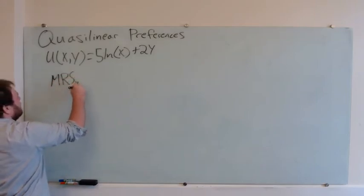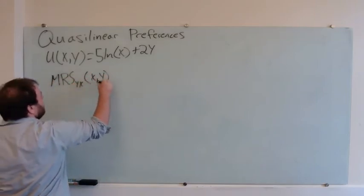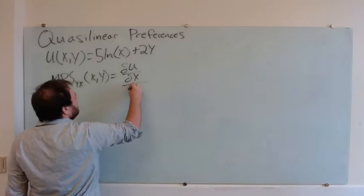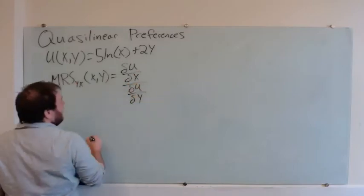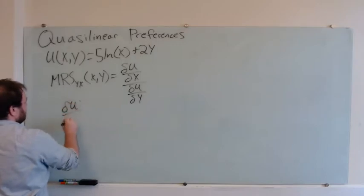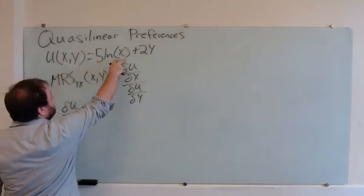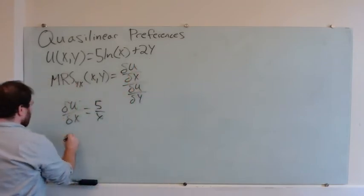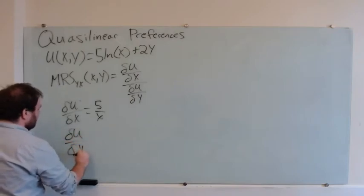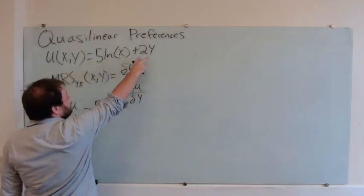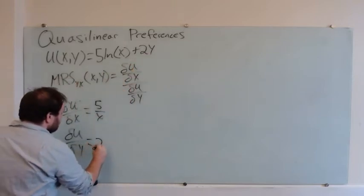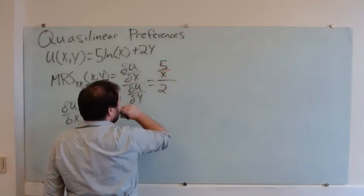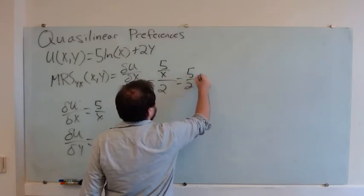MRS of y for x — the amount of y we'll give up per unit of x — is going to be the marginal utility of x over the marginal utility of y. So du/dx: the derivative of 5 log x with respect to x is 5 over x, plus 0. And du/dy: the derivative of 5 log x with respect to y is 0, plus the derivative of 2y with respect to y is 2. So this is just going to be 5 over x divided by 2, which is 5/2 times 1 over x.